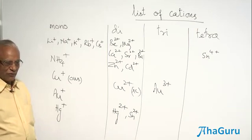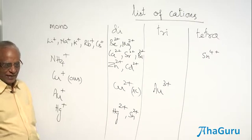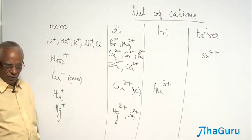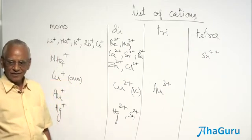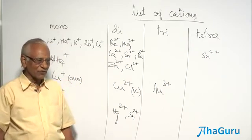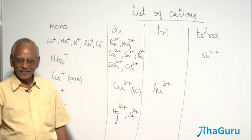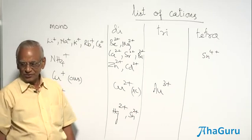What should be the formula of stannic bromide? Stannic - which is stannic? Plus 2 or plus 4? 4. Bromide, Br-. SnBr4. What is the formula of stannic oxide? Sn2O4, SnO4. It has to be simplified as SnO2.